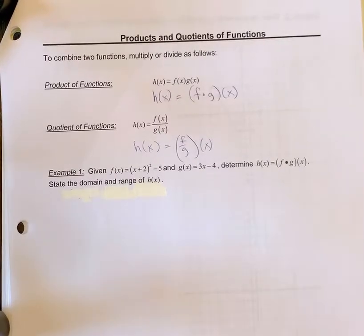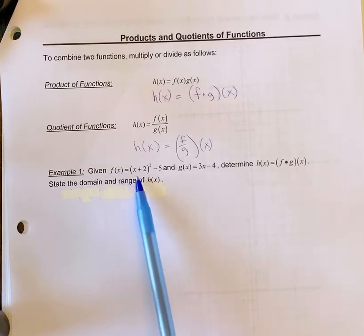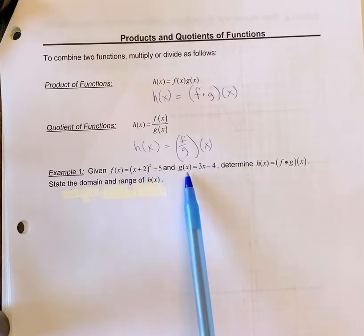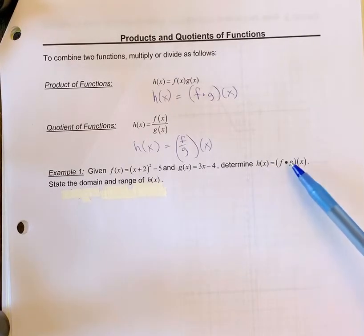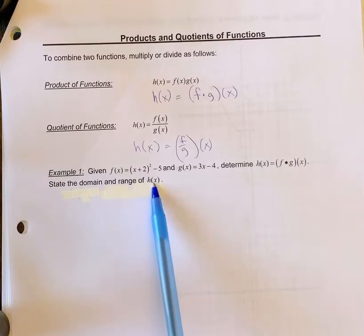Let's look at example one. You're given the f(x) equation, this is a quadratic equation, and you're given g(x) equation, your linear equation. We're going to determine h(x) is equal to f times g of x, and we're going to state the domain and range of h(x).